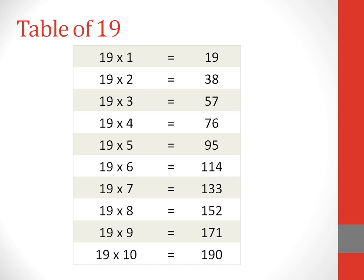Table of 19. 19 ones are 19. 19 twos are 38. 19 threes are 57. 19 fours are 76. 19 fives are 95.